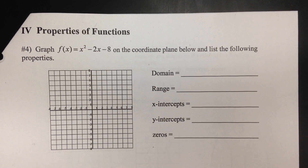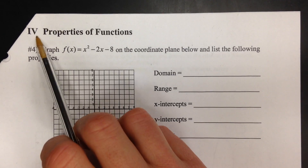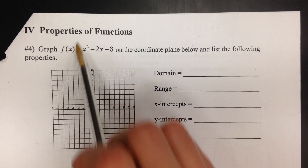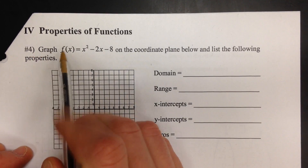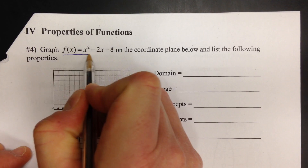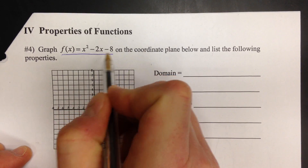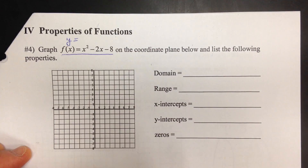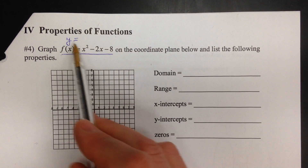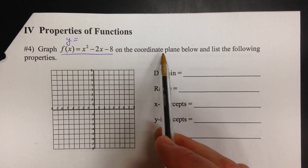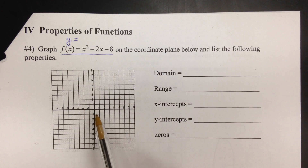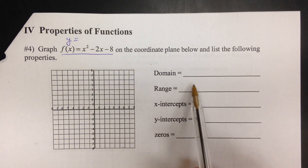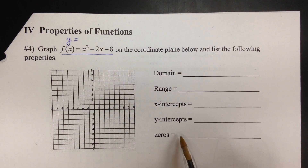We're back for the third part of the notes, on the last page, section four: properties of functions. In number four, it says graph f of x equals x squared minus two x minus eight — that's the same as y equals — it's really just an equation on the coordinate plane. Then we list the following properties: domain, range, the intercepts, and the zeros.